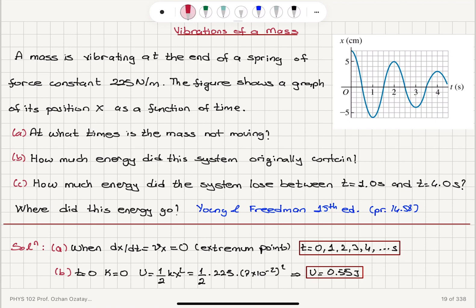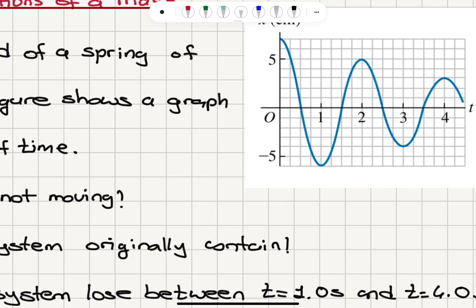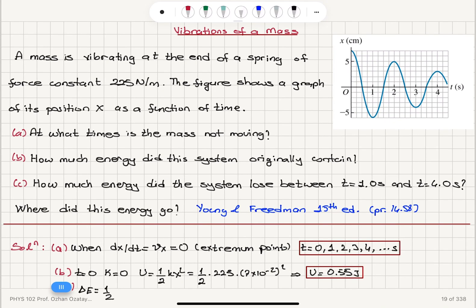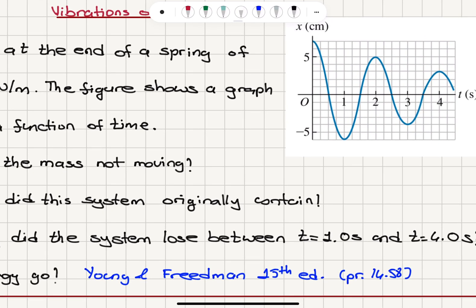So we want to know how much energy was lost between t equals one second and t equals three seconds. So delta E... t equals one second and t equals three seconds are also extremum points. One and four seconds are also extremum points.